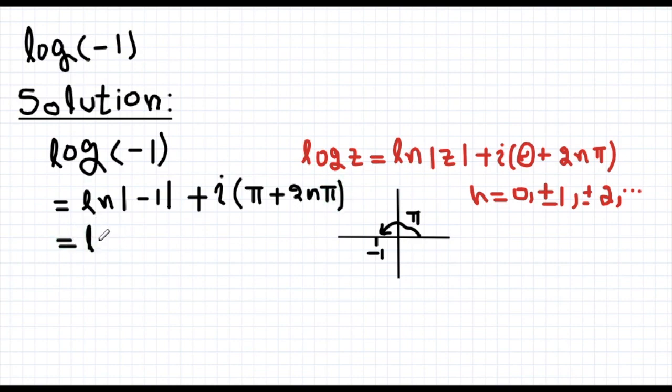Minus 1 magnitude is 1. Take pi common and you get 2n plus 1 into pi iota. Log of 1 is 0.